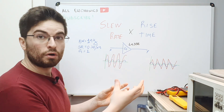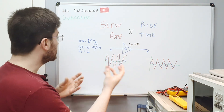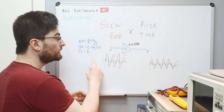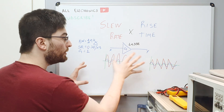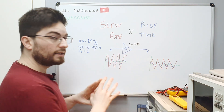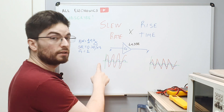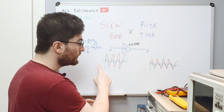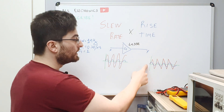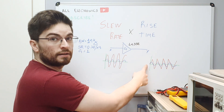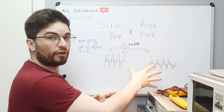Because for a small signal when we are not slew rate limited, the op-amp will work as a linear system. Any sinusoidal signal that enters will have its amplitude or phase altered without distortion.